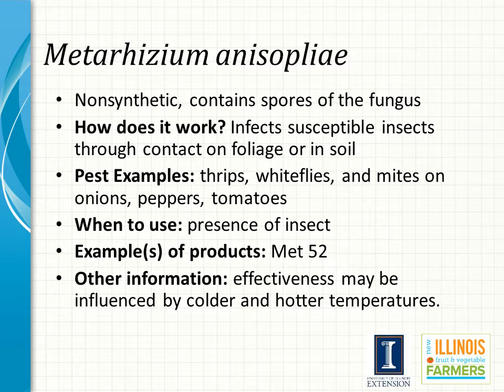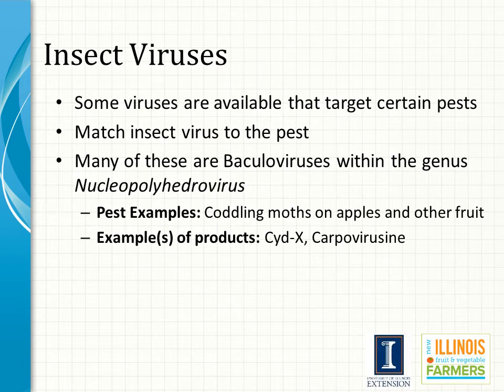This is a non-synthetic fungal spore product used to infect susceptible insects through contact on foliage or in the soil. Pests include thrips, whiteflies, and mites on onions, peppers, and tomatoes. It should be applied when insects are present. An example of an available product is Met 52. When this product is applied, the effectiveness of the spores will depend largely on the soil temperatures, and any extreme temperatures — very hot or cold — will impact the effectiveness.